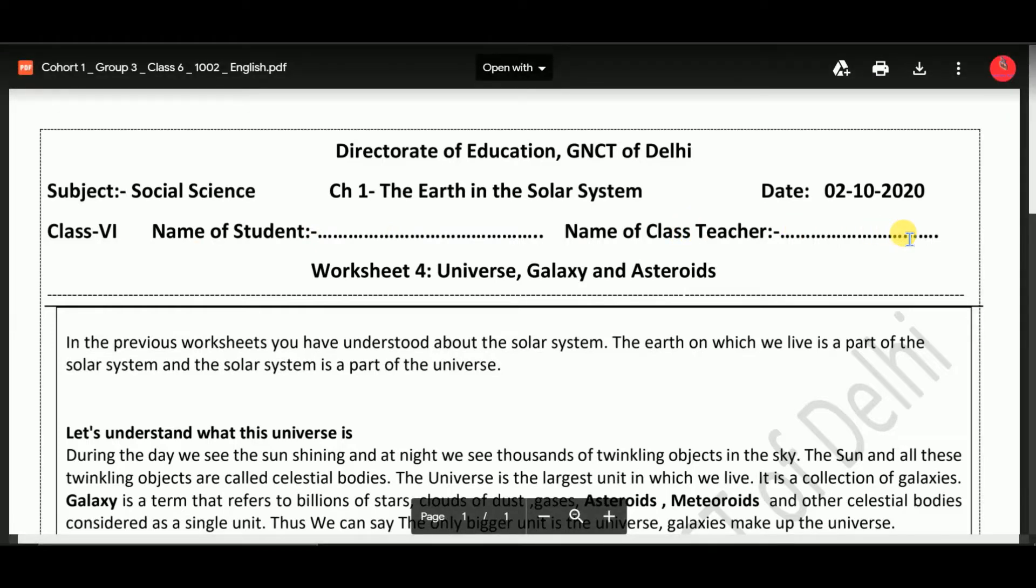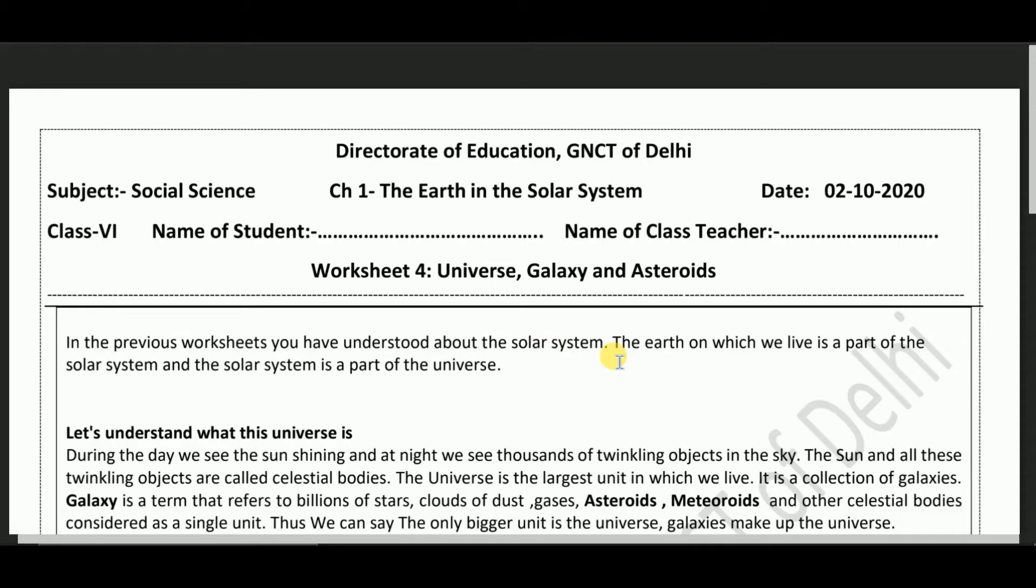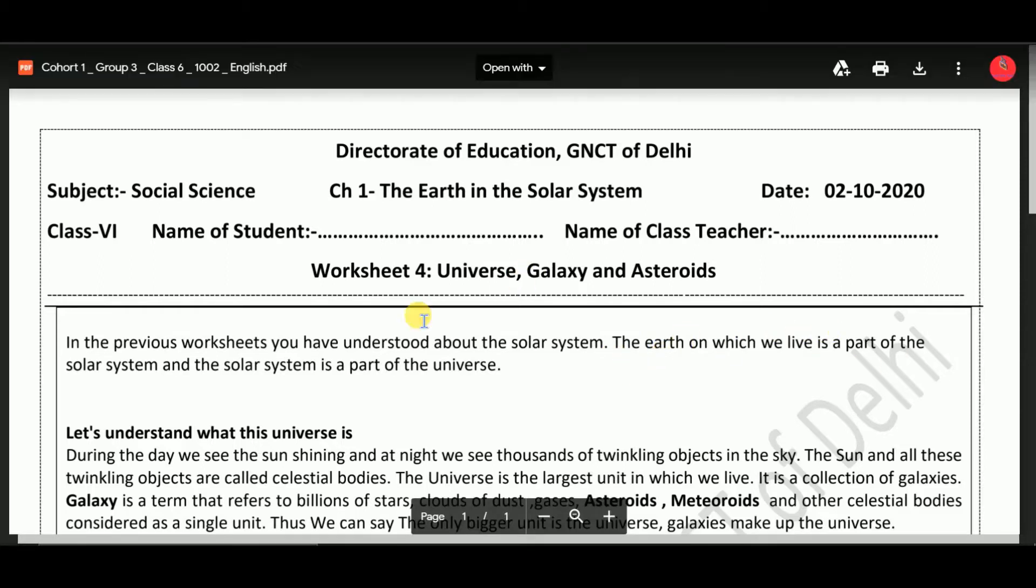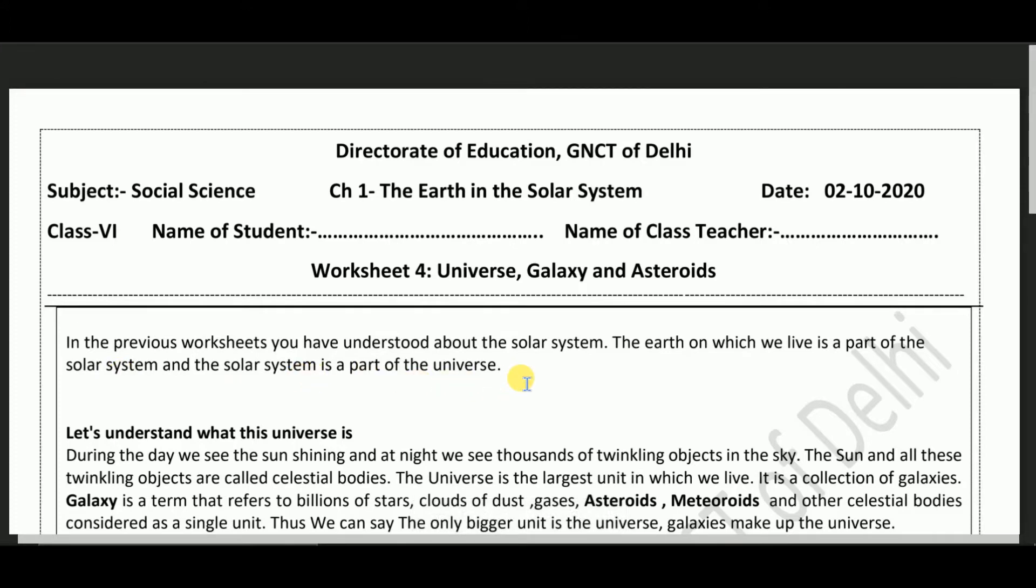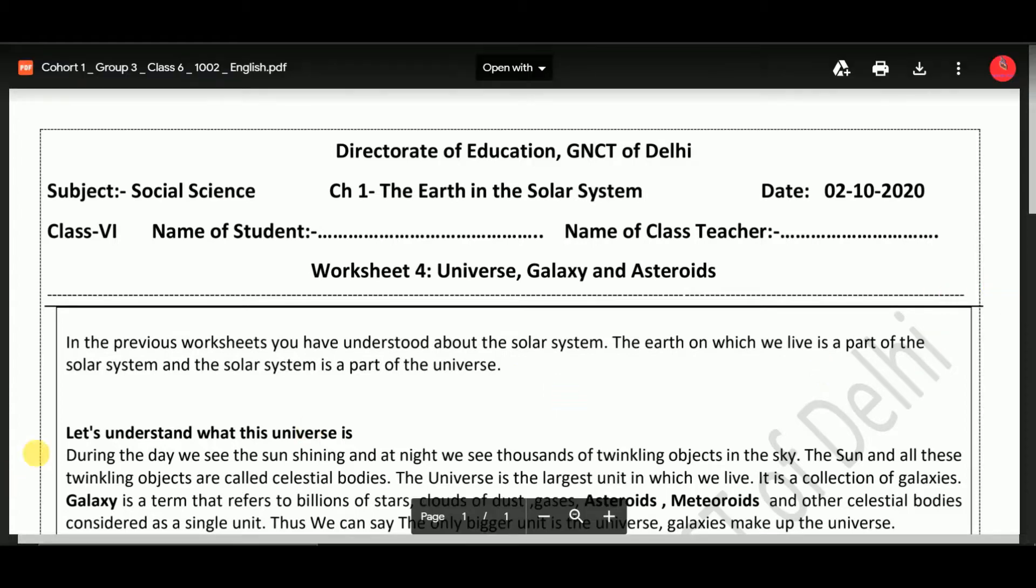Let's do this. In the previous worksheets you have understood about the solar system. The Earth on which we live is a part of the solar system and the solar system is part of the universe. Let's understand what this universe is.